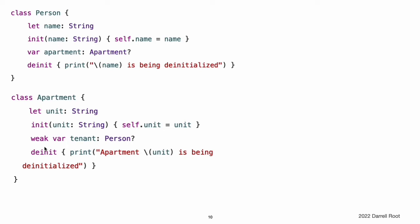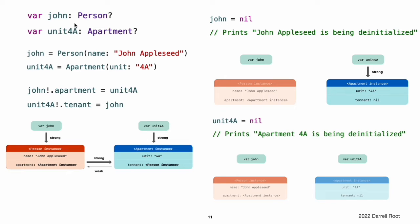This example is identical to the Person and Apartment example from above, with one important difference. This time around, the Apartment type's tenant property is declared as a weak reference. The Person instance still has a strong reference to the Apartment instance, but the Apartment instance now has a weak reference to the Person instance. This means that when you break the strong reference held by the John variable by setting it to nil, there are no more strong references to the Person instance. Because there are no more strong references to the Person instance, it is deallocated and the tenant property is set to nil. The only remaining strong reference to the Apartment instance is from the Unit4A variable. If you break that strong reference, there are no more strong references to the Apartment instance, and it too is deallocated.